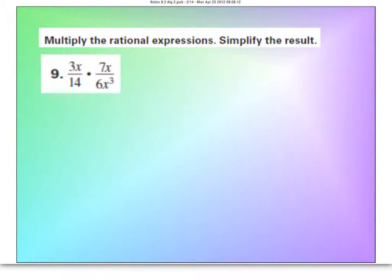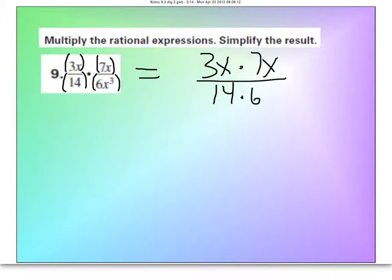Now, here's another one. Simplify these two monomials. Again, this top is considered a monomial because it's one group of just a 3x. This is a monomial. This is and this is. All you do for multiplication is put them all together on the top. So 3x times 7x over 14 times 6x cubed.